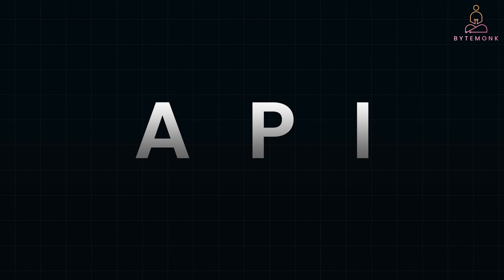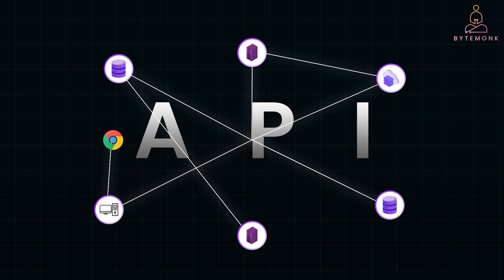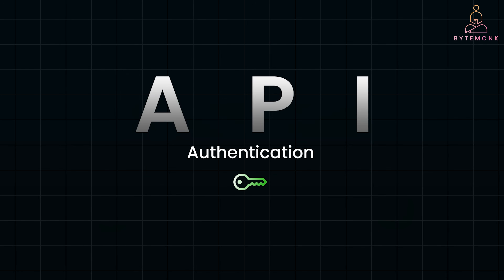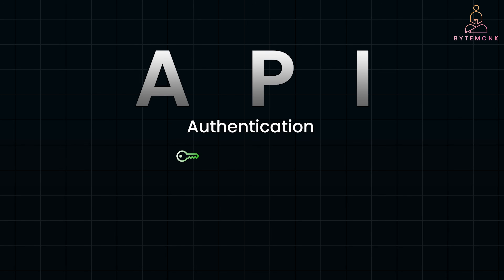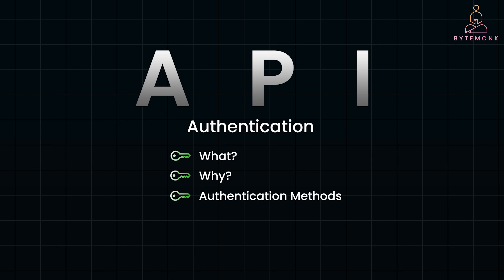APIs are the backbone of most modern applications, allowing different systems to communicate with each other. But how do we ensure that only authorized clients can access these APIs? That's where API authentication comes in. In today's video, we are going to explore 4 key questions about API authentication: what it is, why it's important, the most common authentication methods, and how it differs from API authorization. So let's dive in.